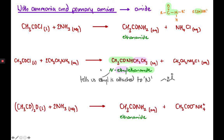Just to show a comparison with an acid anhydride: ethanoic anhydride with ammonia produces the same product, ethanamide. The only difference is the salt — with the acyl chloride we get ammonium chloride, but with the acid anhydride we get ammonium ethanoate, where we have the carboxylate ion and then the cation.